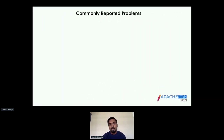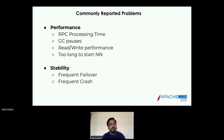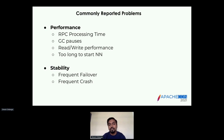Some of the commonly reported problems, if you want to categorize them into broad categories, would be performance and stability. When it comes to performance, most of the time administrators complain about the RPC processing time being too high, or the NameNode experiencing a lot of long GC pauses, and read/write performance beginning to get impacted.